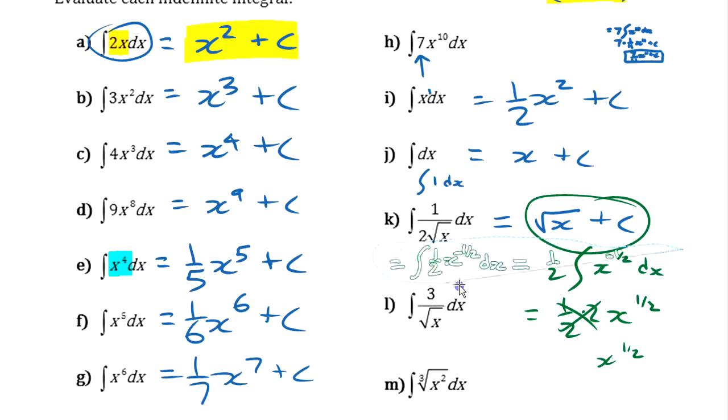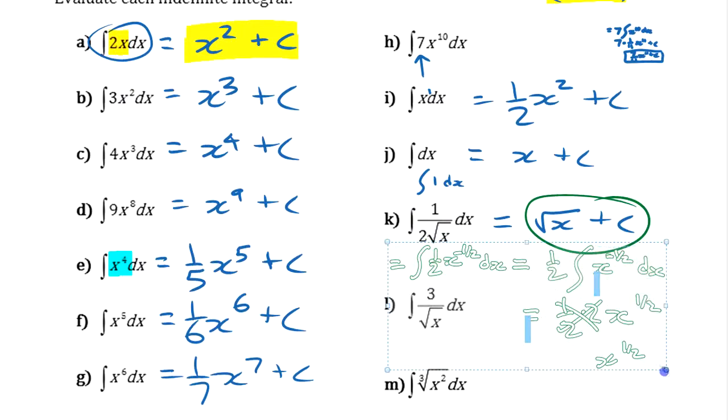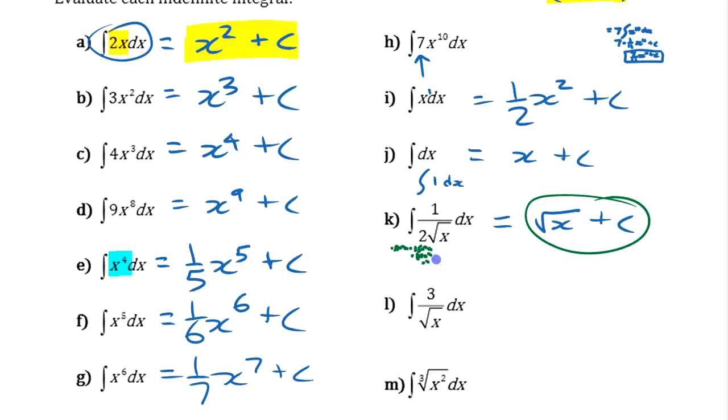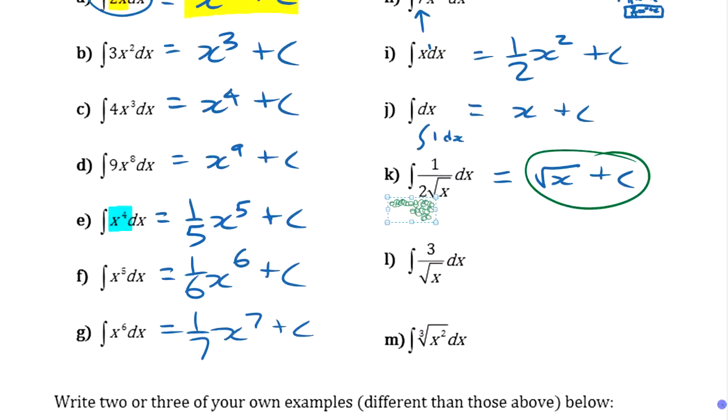All right? Let's get rid of that. Leave it there in case we need it again later. A couple more here to look at. Three over root x. Well, I'm going to do something tricky here. If I happen to know that one over two root x, I just know it's square root of x. I'm going to make this three, put the three out in front.